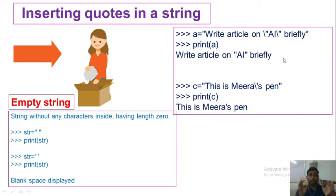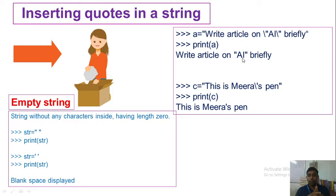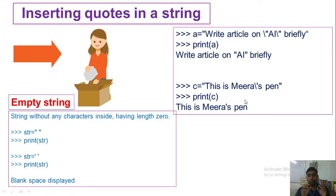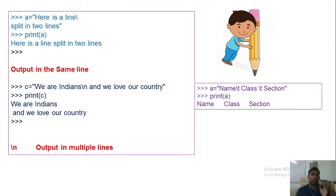Strings must be enclosed in quotes, but we can also insert quotes inside a string using backslash. For example, c = 'this is Mira\'s pen' uses a backslash before the single quote, and print(c) outputs: this is Mira's pen. The backslash is the special character used to insert quotes within a string.